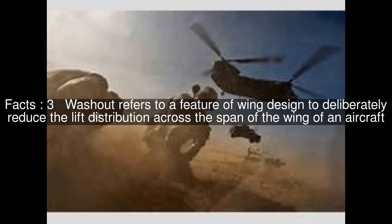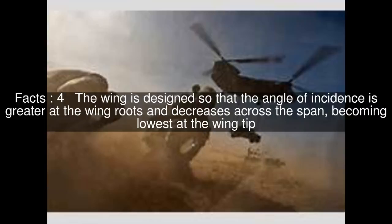Washout refers to a feature of wing design to deliberately reduce the lift distribution across the span of the wing of an aircraft. The wing is designed so that the angle of incidence is greater at the wing roots and decreases across the span, becoming lowest at the wingtip.